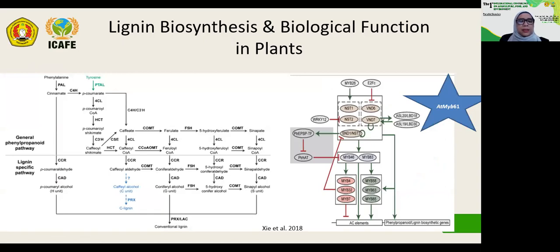Lignin biosynthesis starts with the synthesis of monolignols in the cytosol. There are three common monolignol units: the S unit for syringyl, the G unit for guaiacyl, and the H unit for hydroxyphenyl propane. These monomer units are then transported to the cell wall where polymerization takes place, and this process involves many genes.